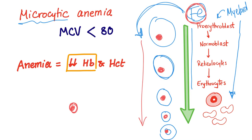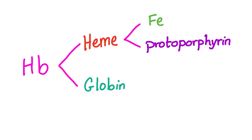Now in order to memorize all of the forms of microcytic anemia, we need to look at this diagram. Hemoglobin consists of heme and globin — that's why the name is hemoglobin. Heme is further broken down into iron and protoporphyrin. As for globin, it will be recycled — globin is a protein, and the amino acids in this protein will be recycled. The iron will also be recycled.